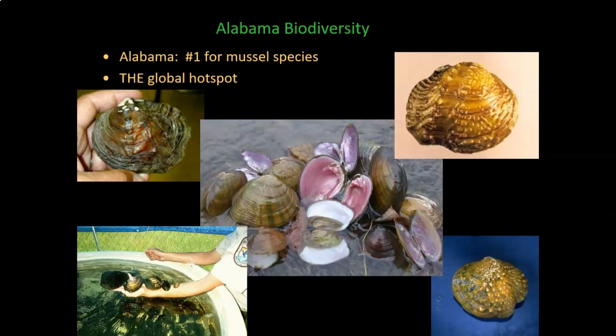We are number one for mussel species — you might call them clams, but the technical term is mussels. From the outside they're kind of boring looking, brown and lumpy, but on the inside they often have bright colors. For a long time people would harvest mussels to find freshwater pearls, and they were used in the button industry before we had plastics. Mussels have some crazy biology we're going to talk about in a couple of weeks. In terms of mussels, we are the number one state for mussel biodiversity and the global hotspot for mussels.